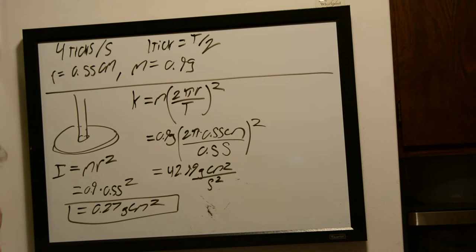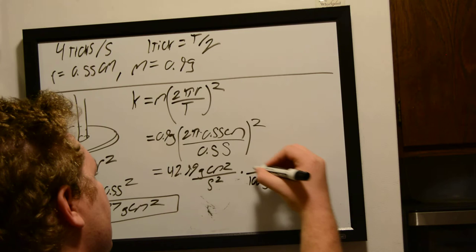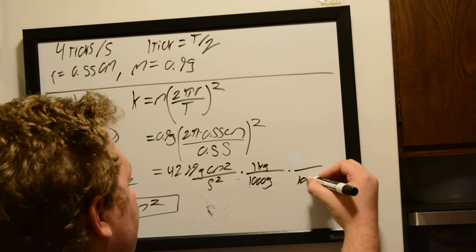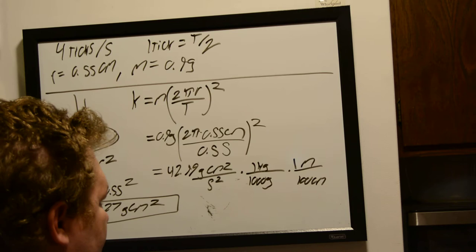And newtons is 1 kilogram meter per second. So, we want to convert this to kilograms and meters. So, we know there's 1,000 grams in 1 kilogram, and there's 100 centimeters in 1 meter. But, this is squared centimeters. So, to cancel this out, we're going to need to square that.